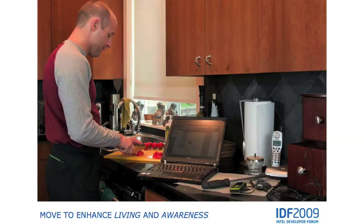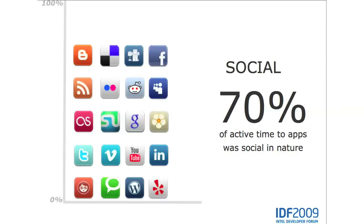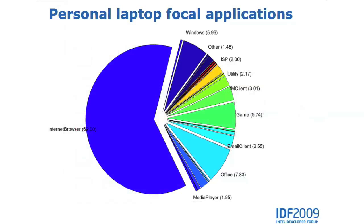So what are they checking? It turns out that if you look across the applications they're using and the websites they're going to, about 70% of the time, the activity is social in nature. By social, we mean things like Facebook and Twitter, but also email and IM.